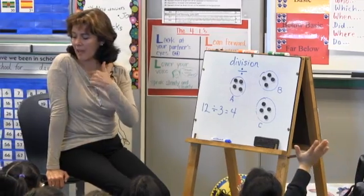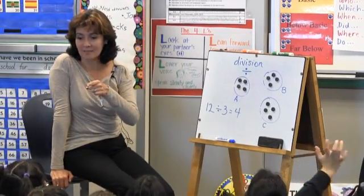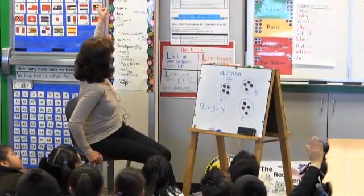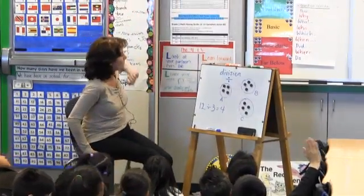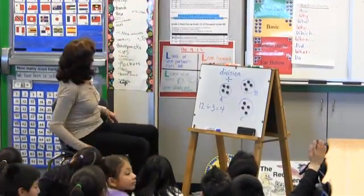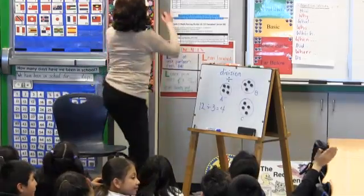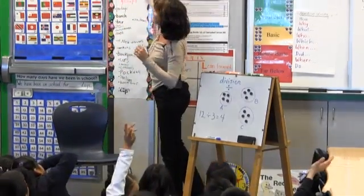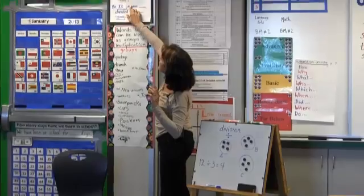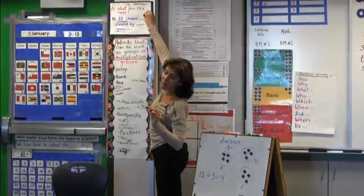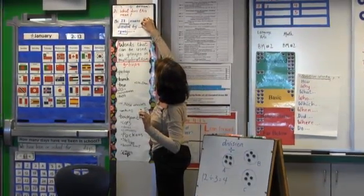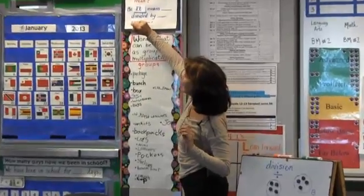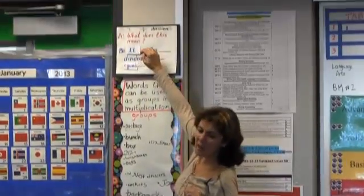I'll be A and you'll be B. You can help yourself by looking up there. We have the question: what does this mean? A number will go here and a number will go here. Twelve divided by three equals four. Let's practice.